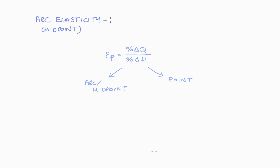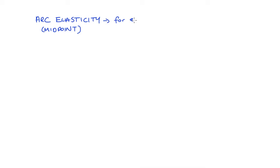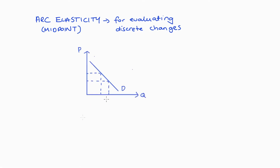I'm going to start by thinking about our arc or midpoint elasticity formula. This formula is suitable for when we're evaluating a discrete change in our variables. For instance, if we have a demand curve and the price rises discretely from $2 to $4, and as a result there's a change in the quantity demanded from 8 to 4, the trick is to find our percentage changes associated with this discrete change.